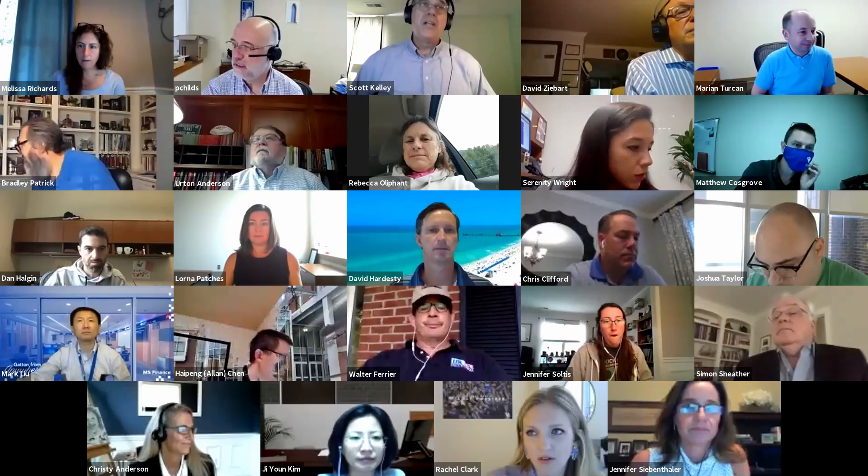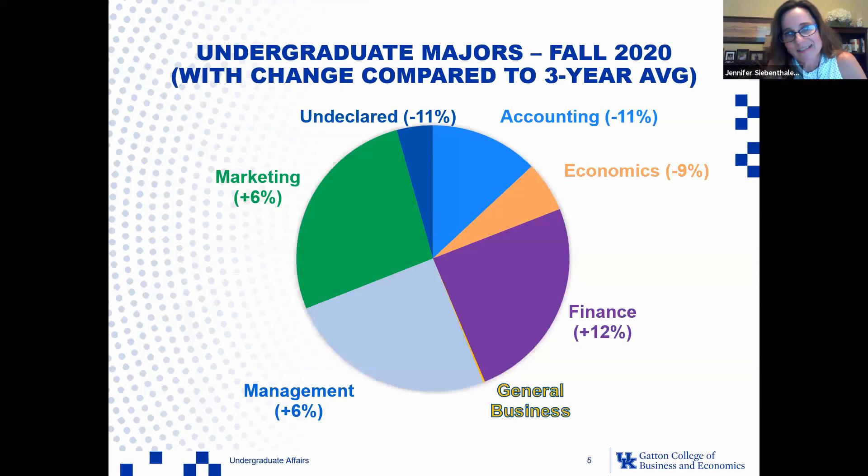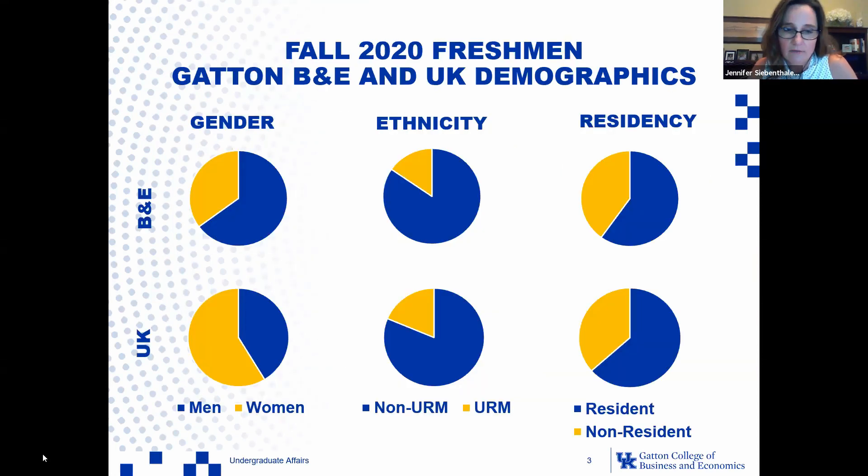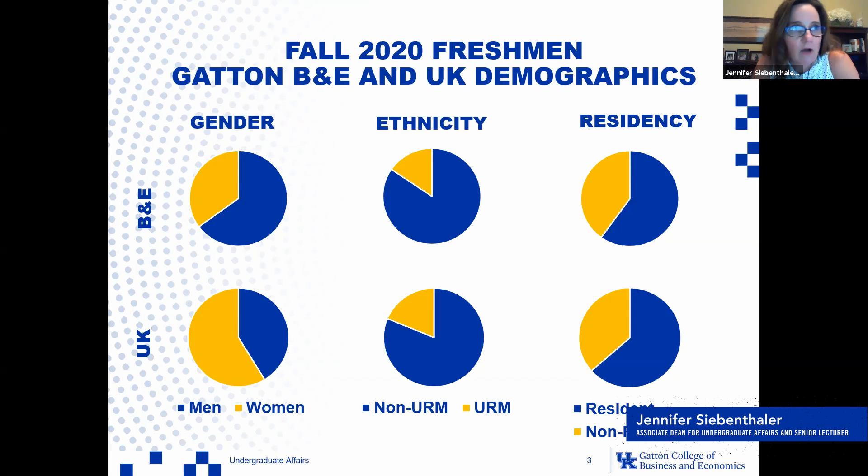This year, each of our Associate Deans presented to the College to give a rundown of where we are. First, you'll see Associate Dean Jennifer Siebenthorpe, who will give a profile of our incoming freshmen. A big shout out to Jennifer and our Director of Recruitment, Rachel Clark. Here in Gatton, our incoming cohort is pretty much even with last year.